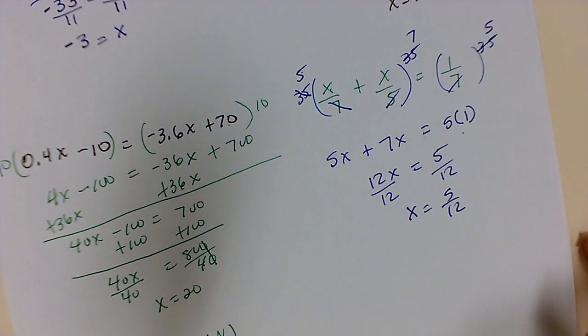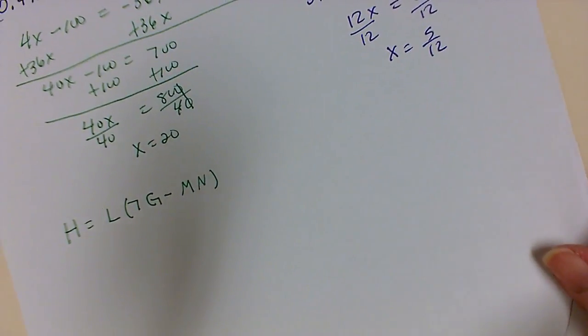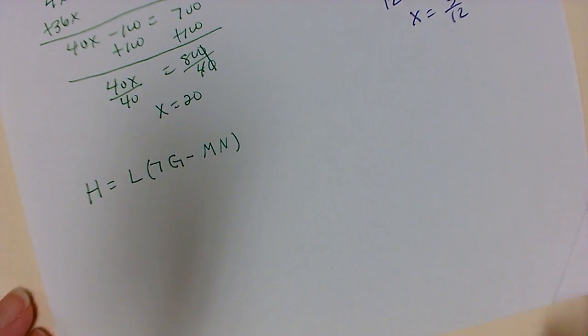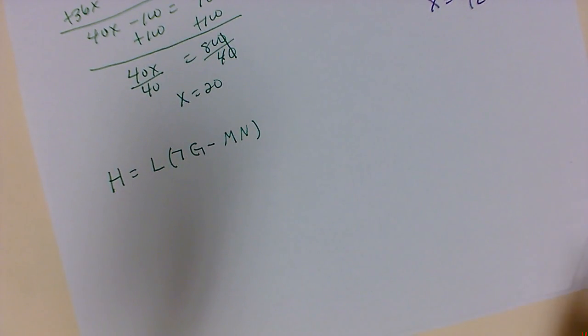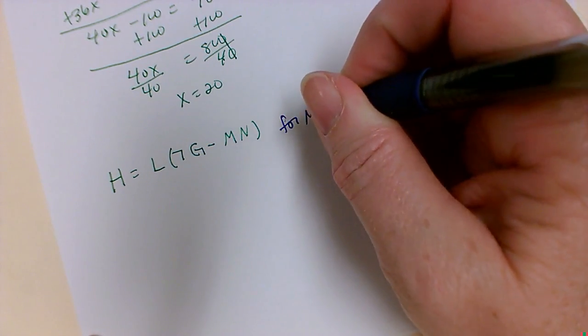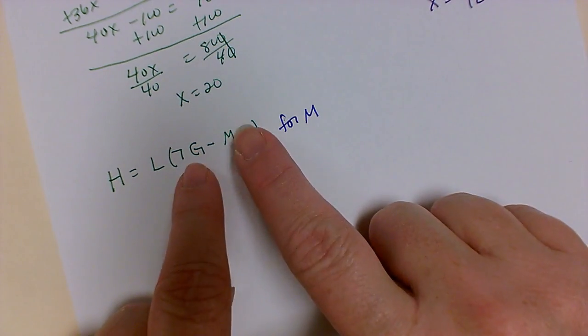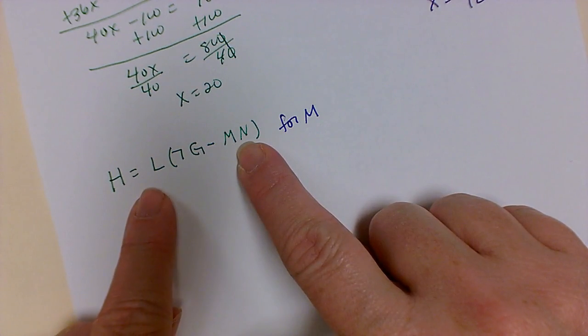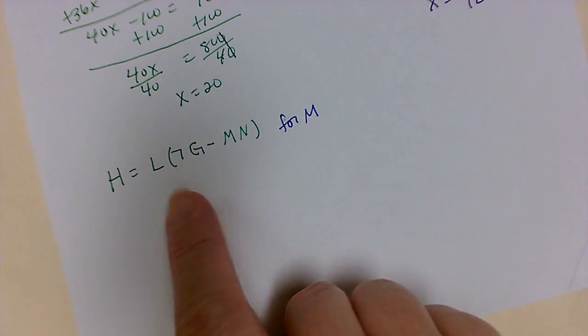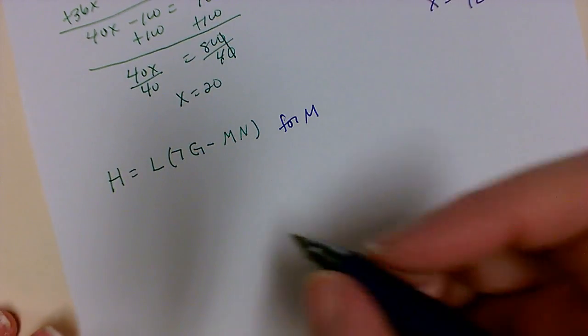We have one more problem to work here. And this is where we're solving for a variable. So in this case, we have h is equal to l times 7g minus mn. And we want to solve this for m. So I want to solve it for this letter m. So I have to figure out where I'm going to start. Because it's inside the parentheses, I need to go ahead and do some distribution.